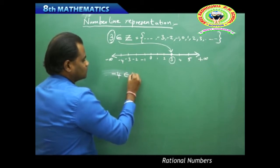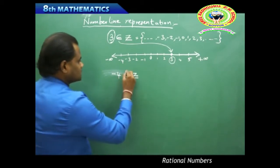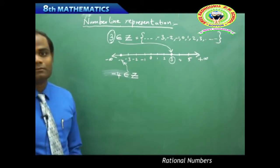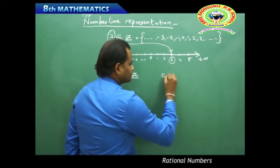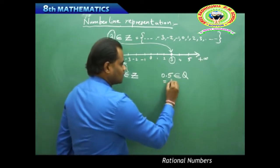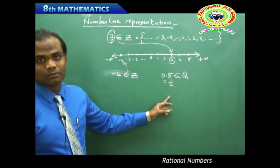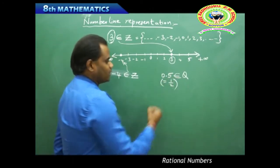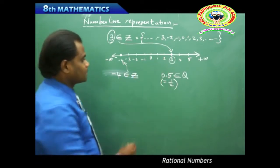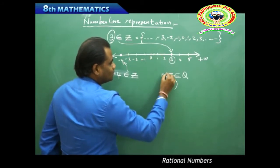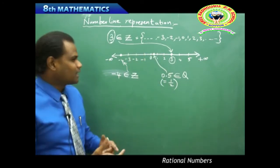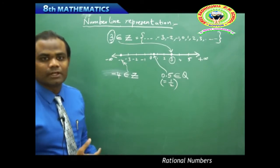To represent minus 4 belonging to integers, I identify and mark that point. Now, if I want to identify 0.5, which is a rational number — 0.5 is 1/2, in the form p/q with p and q being integers and q not equal to 0 — then 0.5 lies between 0 and 1. I identify exactly the midpoint between 0 and 1 where 0.5 lies, and in this way I can identify any value belonging to the real numbers on the number line.